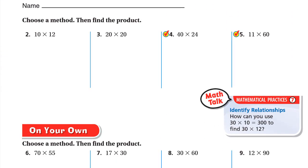Let's do the exercises. For 10 × 12: there is one zero in the factors, so we carry that zero into the product. Now it's 1 × 12, which is 12, so the answer is 120. Or simply: multiplying by 10 means placing one zero to the right of 12.